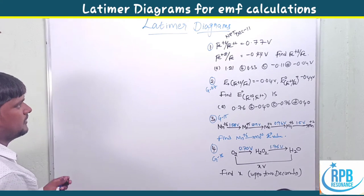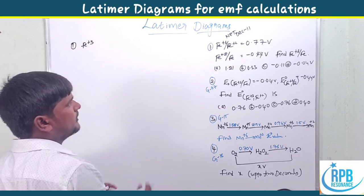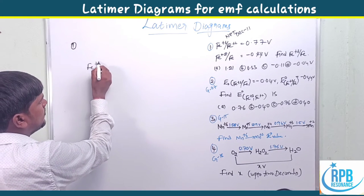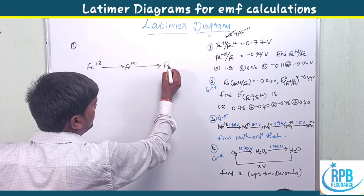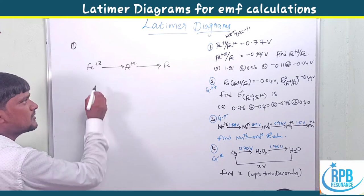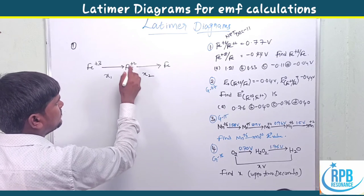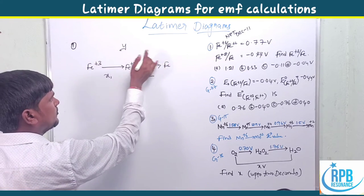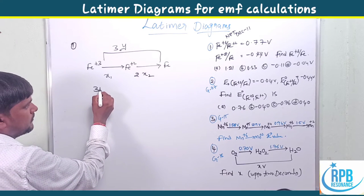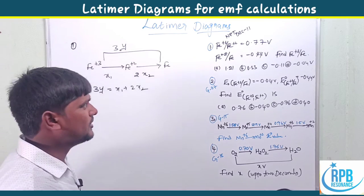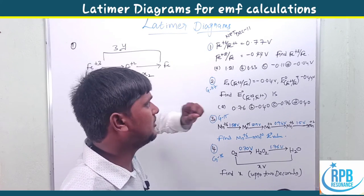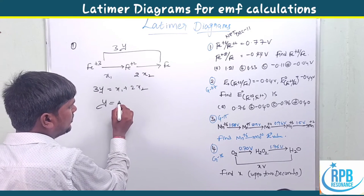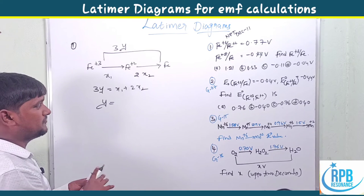Problem 1 — CSIR NET December 2011: Given E° for Fe³⁺/Fe²⁺ and Fe²⁺/Fe⁰, find E° for Fe³⁺/Fe⁰. Write the Latimer diagram: Fe³⁺ → Fe²⁺ → Fe⁰. Here x₁ is the +3 to +2 step (one electron), x₂ is the +2 to 0 step (two electrons). So 3y = x₁ + 2x₂. They are asking for y (E° for Fe³⁺ to Fe⁰).